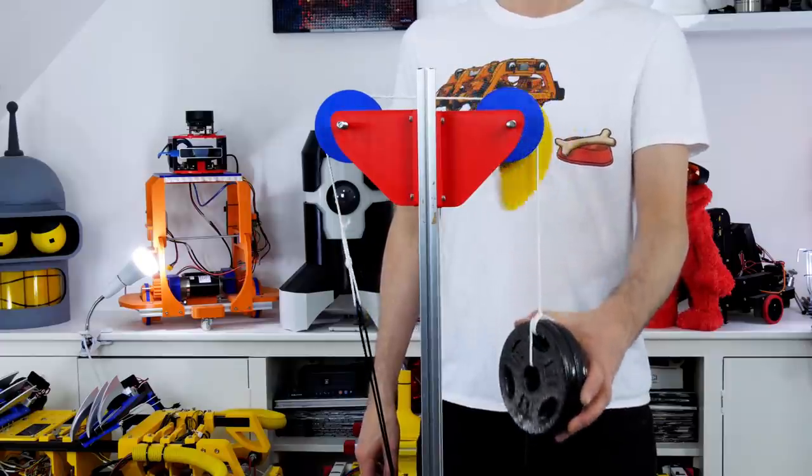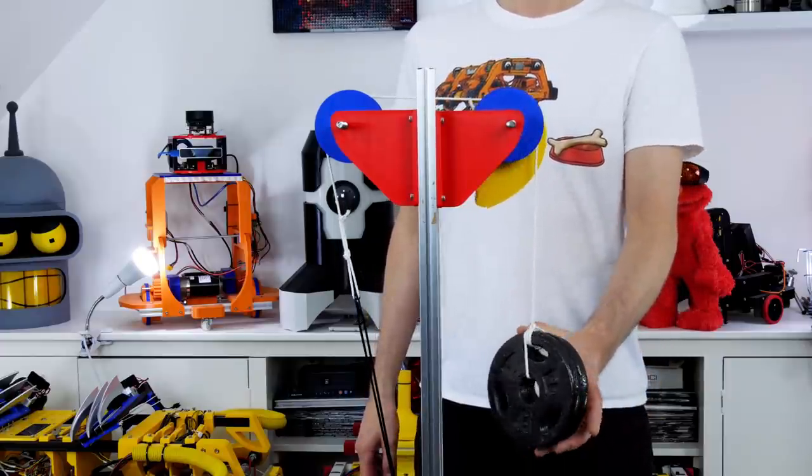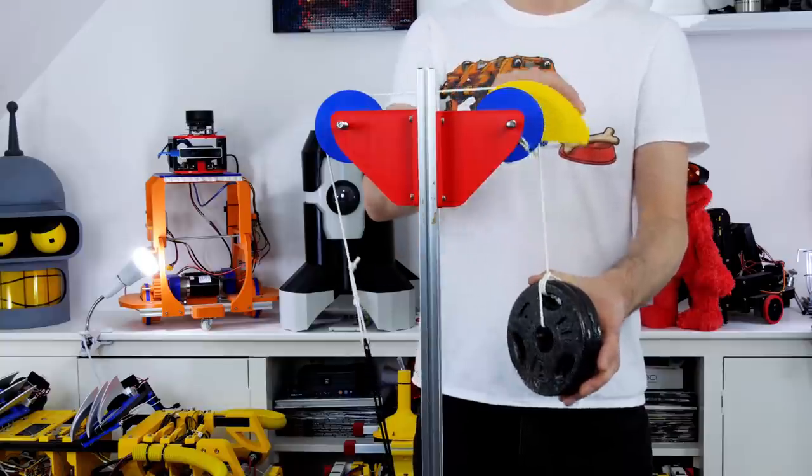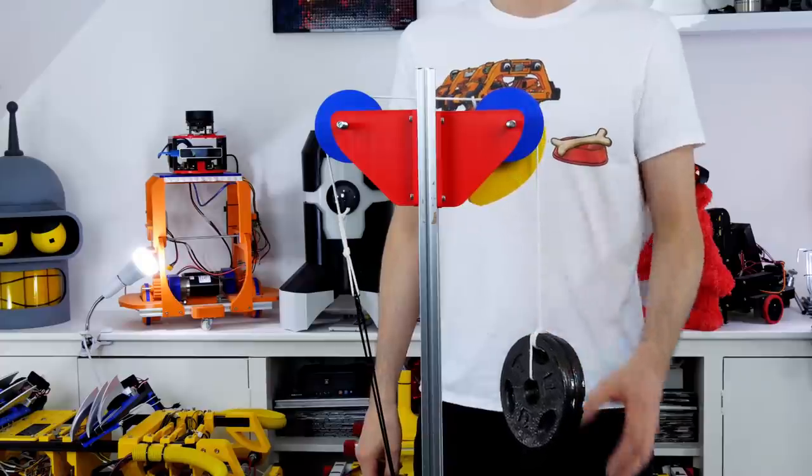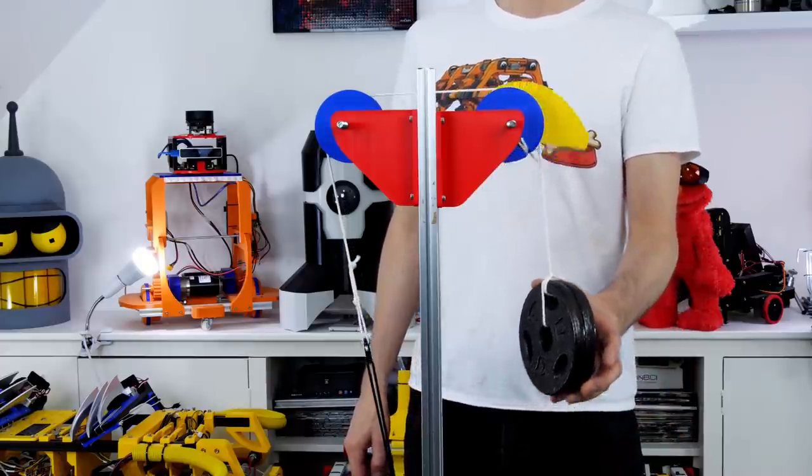Ideally we'd stretch the bungee by even amounts, measure the force required at each, and use that data to plot the contour of the cam so it's calibrated to the spring, but I'm pretty happy with the way the first exponentially contoured cam has worked out.